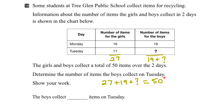Now if I look at this number sentence I can add the 27 and the 19, and that would give me 46 plus the question mark equals 50. So in order for this to be equivalent on both sides, what would the question mark have to be? Well the question mark would have to equal 4, because 46 plus 4 would give us 50.